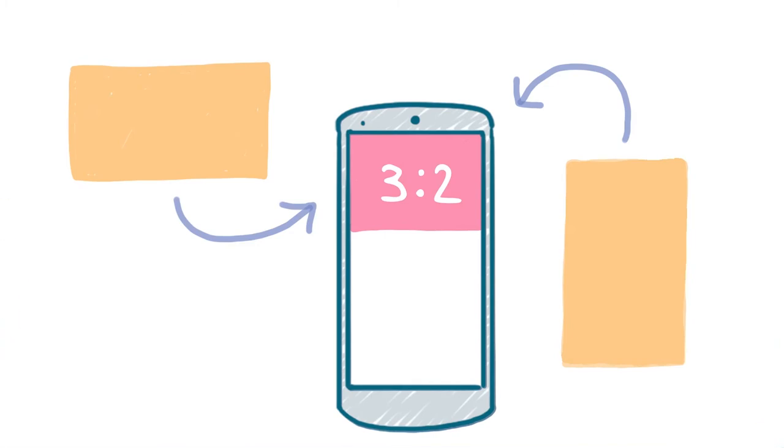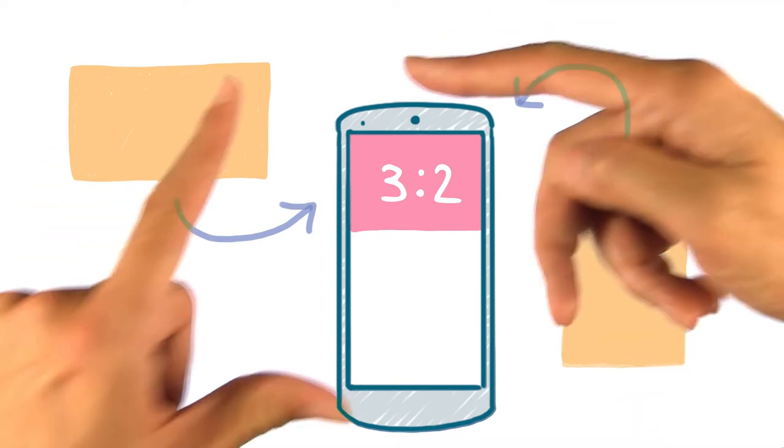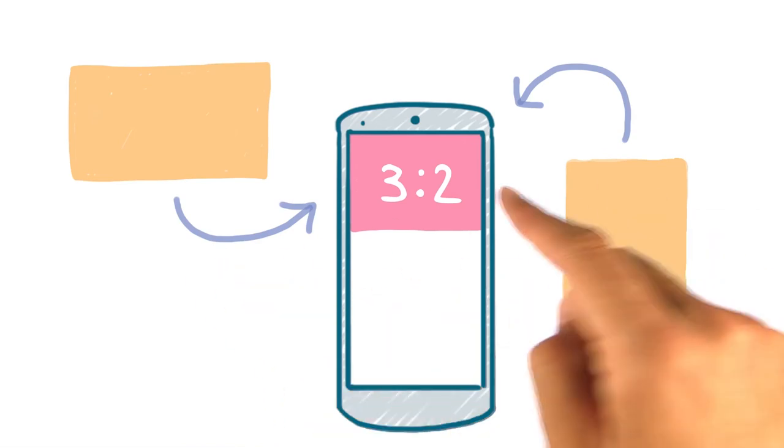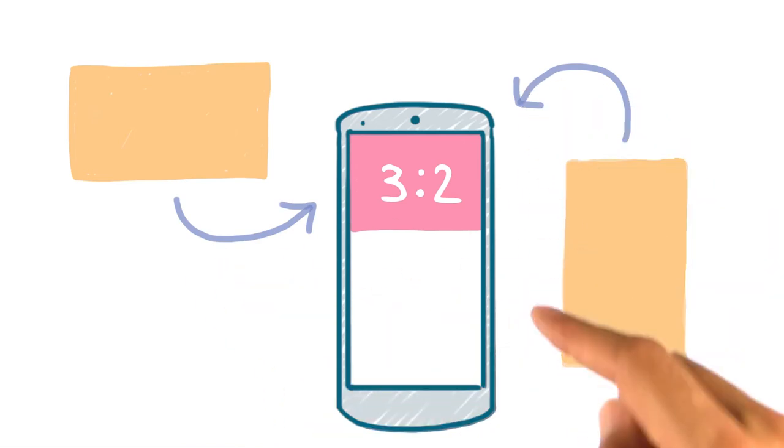We've already covered using scale type, such as center crop, to make the content fit within an ImageView. But how do we enforce the size of the view itself? To do this, we can easily subclass ImageView to enforce a given aspect ratio. Let's walk through an example of always wanting our images to show with a 3:2 aspect ratio. That is, whatever width it's given, we'll set its own height to be two-thirds of this.